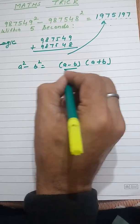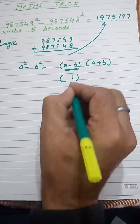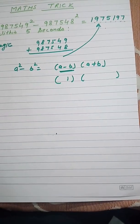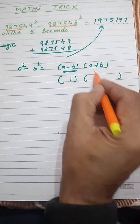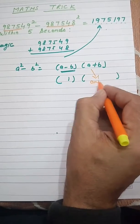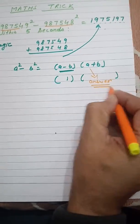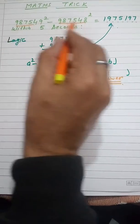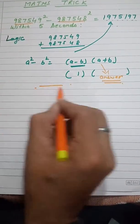Here a minus b is always 1, so you have to just add these two values and you will get your answer. But always remember, this is only applicable for two consecutive numbers. Try more problems.